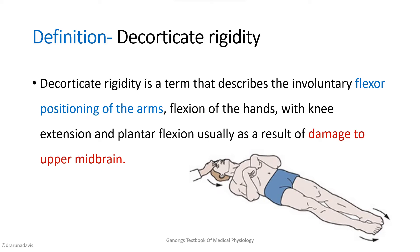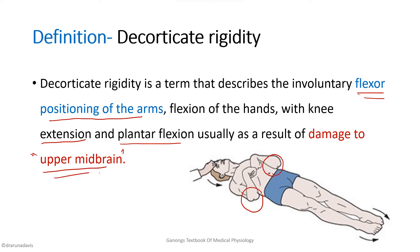Decorticate rigidity describes involuntary flexor positioning of the arms. The major difference is the position of the arms — in decerebrate it was extended, here it is flexed. The knees are in extension with plantar flexion, and the damage is in the upper midbrain. So decorticate rigidity is when there is damage in the upper midbrain.